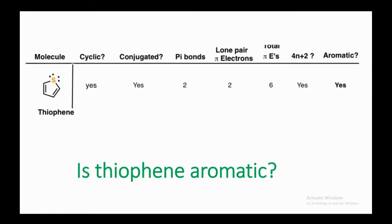Now count the number of pi bonds. There are two pi bonds inside the ring. Then, how many lone pair pi electrons? Even though there are four pi electrons in two lone pairs, we will only count two pi electrons, not four.